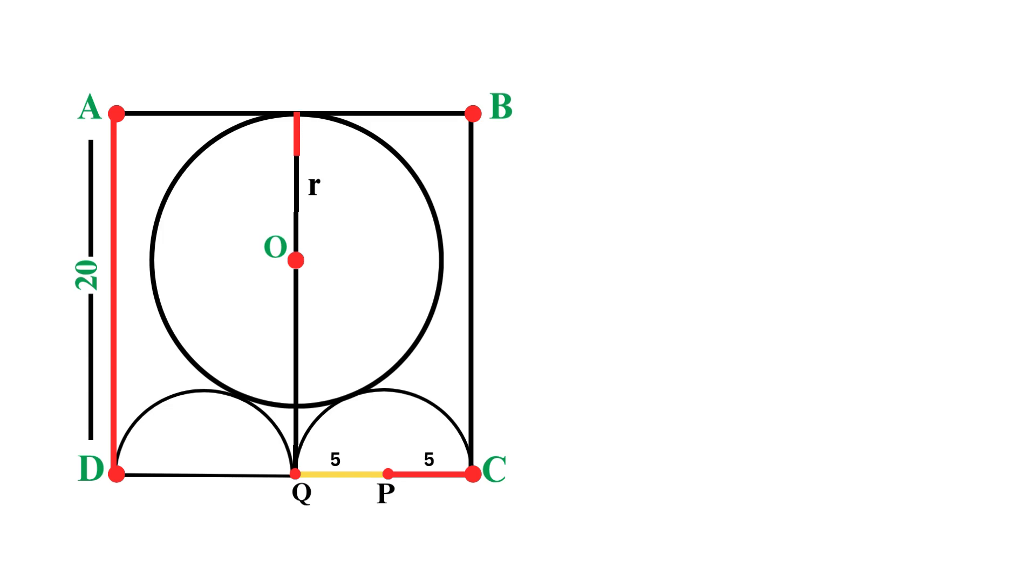Now, think about how this distance breaks down. From the top of the square down to the center O, that's a distance of R because the radius extends upward to touch the top side. And from the center O down to the bottom, this remaining distance must be 20 minus R. Therefore, the vertical distance from O to Q equals 20 minus R.